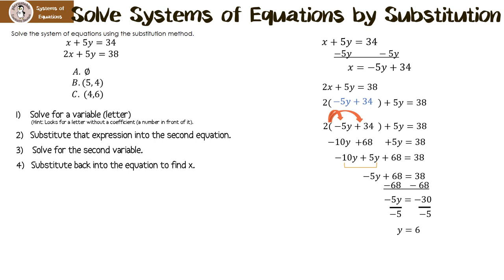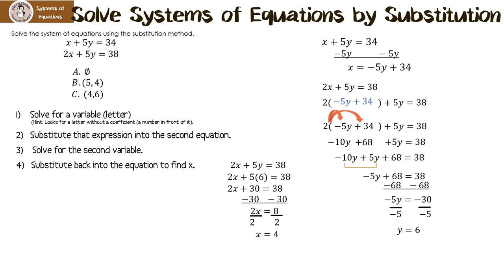Now we substitute y back into one of the equations to solve for x. I'll use the second equation, putting 6 in for y. 5 times 6 is 30. Subtract 30 from both sides: 2x equals 8. Divide by 2: x equals 4. Looking at our possible answers — it's not no solution because we have an x and a y. x is 4 and y is 6, so the answer is the ordered pair 4, 6.